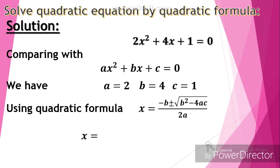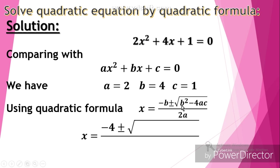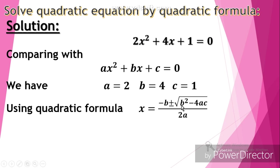Now using the quadratic formula: x is equal to minus b plus or minus the square root of b squared minus 4ac, divided by 2a. This is the quadratic formula. Now we substitute the values of a, b, and c.